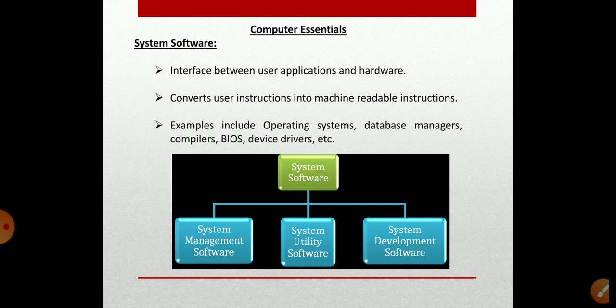The second type is system utility software. It is designed to help analyze, configure, or maintain a computer, focusing on computer infrastructure including the computer's hardware, operating system software, and data storage operations. The third type is system development software, which includes the development of customized systems or the creation of database systems. System software purely deals with the hardware. The user has nothing to do directly with system software, but it must be present so that a user can perform tasks with application software.